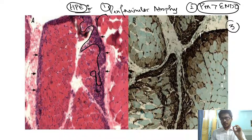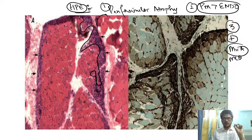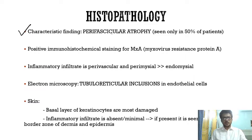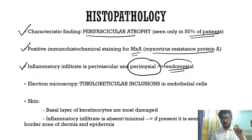On immunohistochemical staining there is positive staining for MxA (myxovirus resistance protein A) — this is a very important MCQ question. To summarize the histopathology: perifascicular atrophy is the hallmark finding, though it is seen in only 50 percent of patients. Positive immunohistochemical staining for MxA is very important. Inflammatory infiltrate is more in the perimysium than the endomysium, whereas more predominant endomysial inflammation is seen in inclusion body myositis and polymyositis.